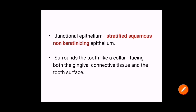Junctional epithelium is basically a stratified squamous non-keratinizing epithelium. It is very important to note that it is a non-keratinizing epithelium, and it surrounds a tooth like a collar. It faces both the gingival connective tissue and the tooth surface — this is why junctional epithelium is given so much importance.